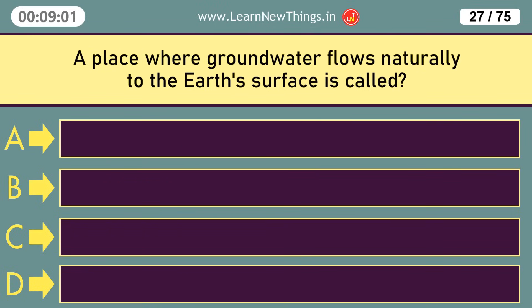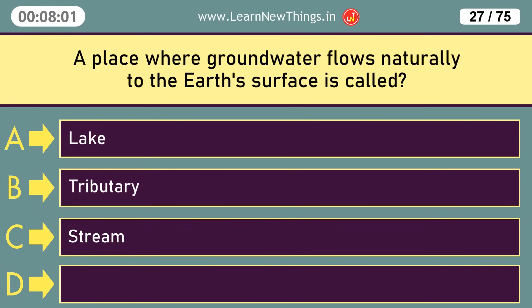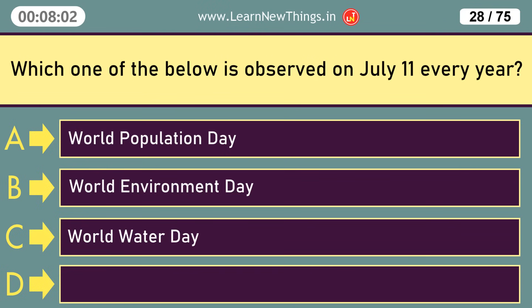A place where groundwater flows naturally to the earth's surface is called a Spring. Which one of the below is observed on July 11 every year? World Population Day.